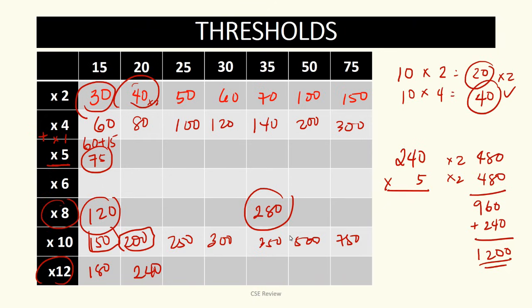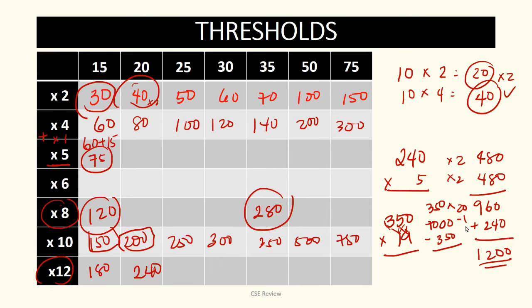This more creative way of multiplying is something you can practice. For example, 350 times 19 — complicated using the long cut because it's two layers. But if you think of it as 350 times 20, which is just times 2 plus two zeros, that's 7,000. Then minus one 350 to make it times 19 — because 20 minus 1 is 19. This gives you 6,650, something you can do mentally when you're familiar with thresholds.